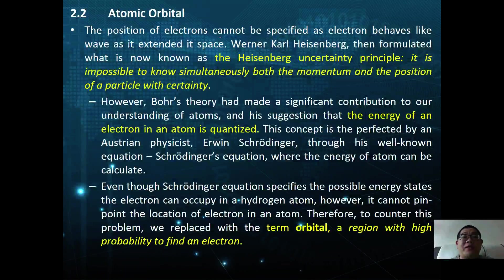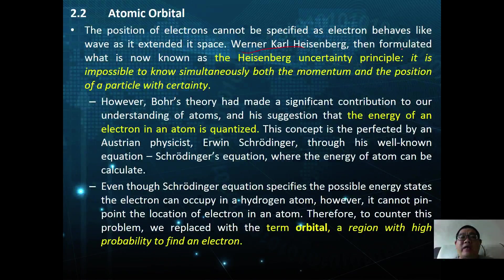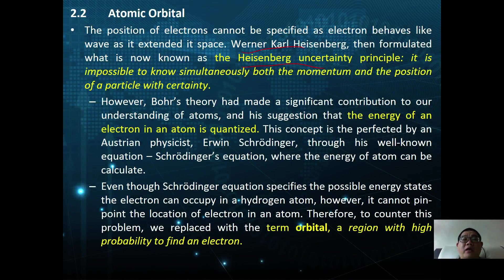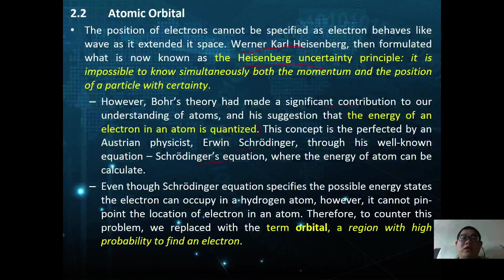It is said that the position of an electron cannot be specified as electrons behave like waves as they extend in space. Werner Heisenberg then formulated what is known as the Heisenberg uncertainty principle, stating that it is impossible to simultaneously know both the momentum and the position of the electron with certainty. Bohr's theory made a significant contribution to our understanding of atoms, with his suggestion that the energy of an electron is quantized.